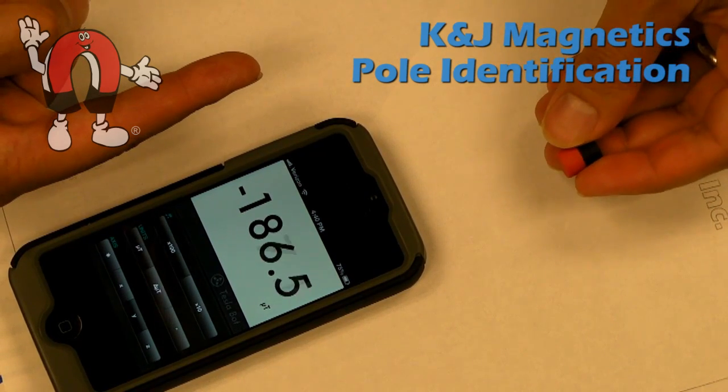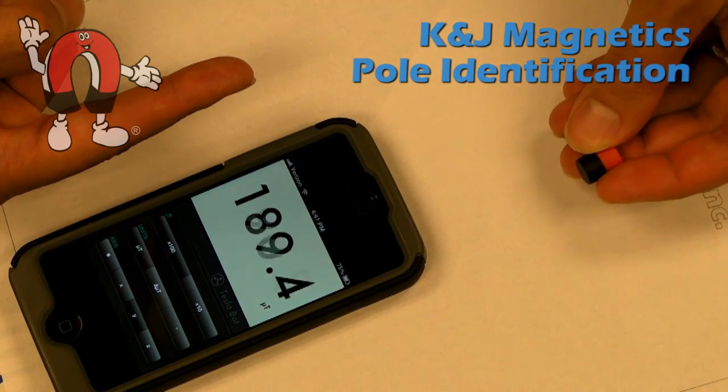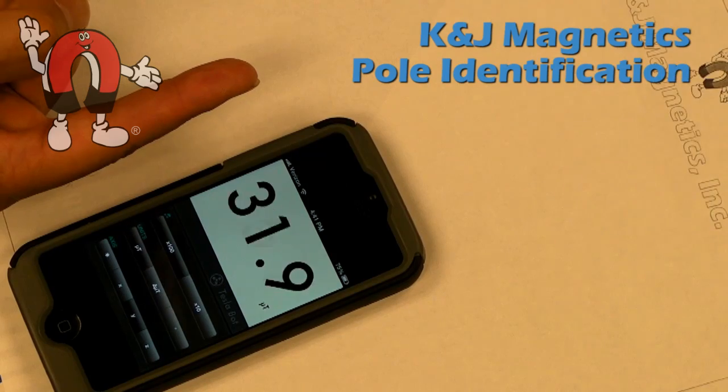Again, north pole near the phone, you see a negative number. South pole near the phone, it's a positive number.